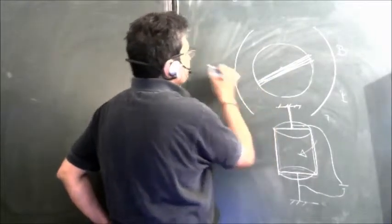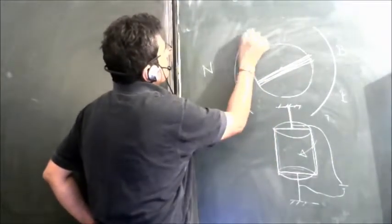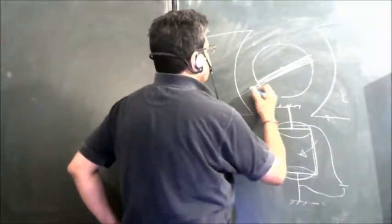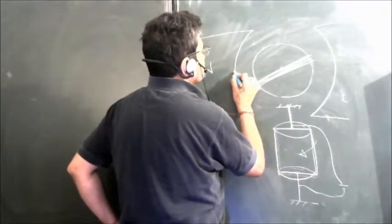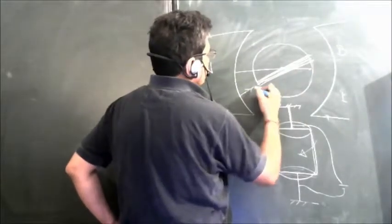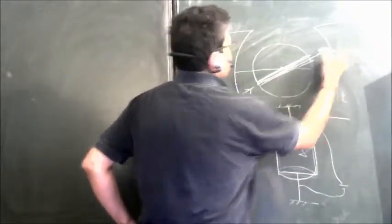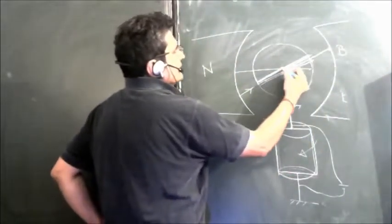If this is the north pole and this is the south pole, the magnetic field is going like this at all the places. When we look at the coil, just see how the magnetic field and the area of the coil relate.